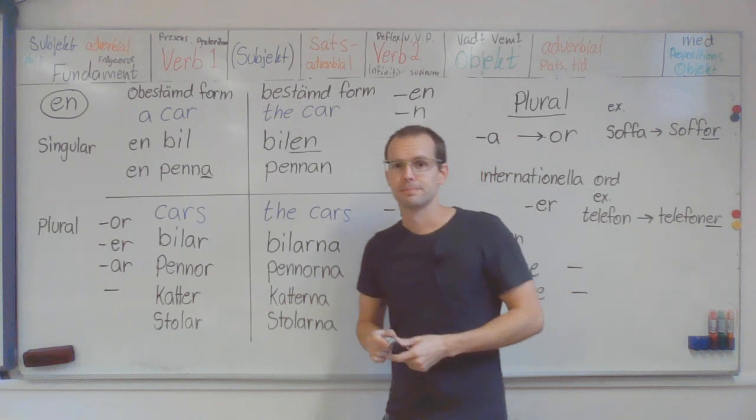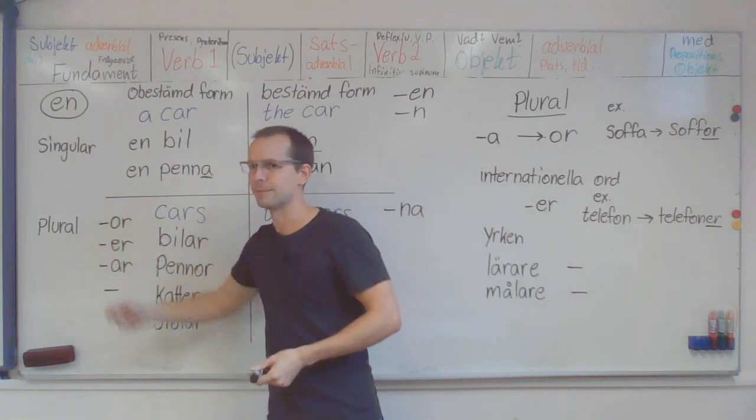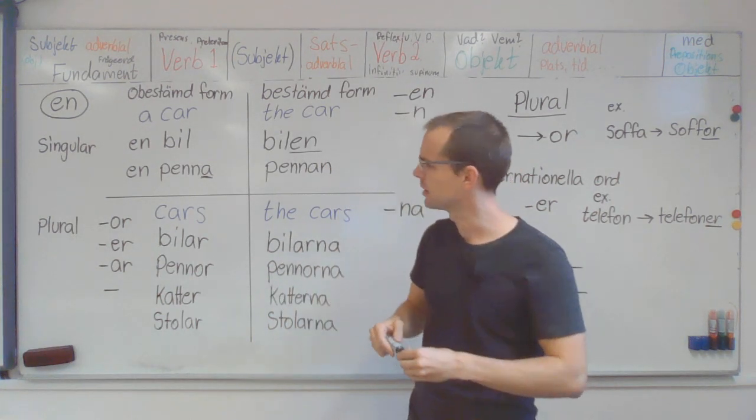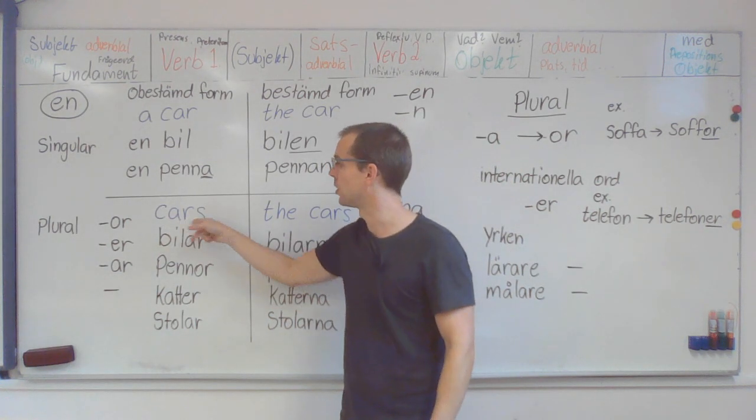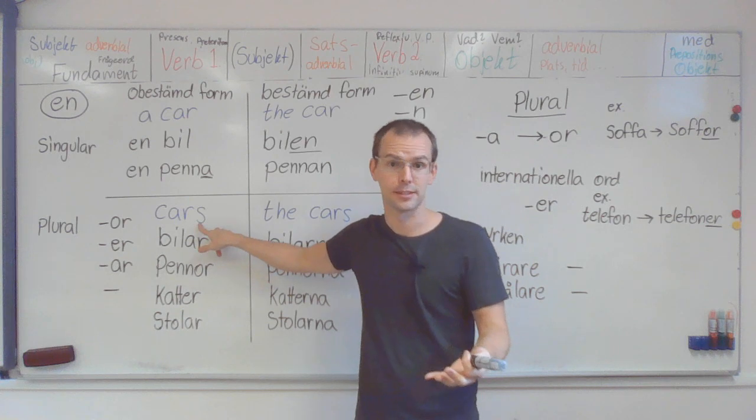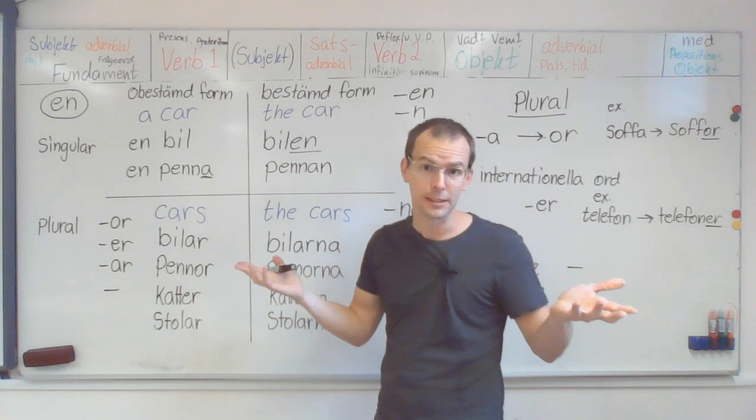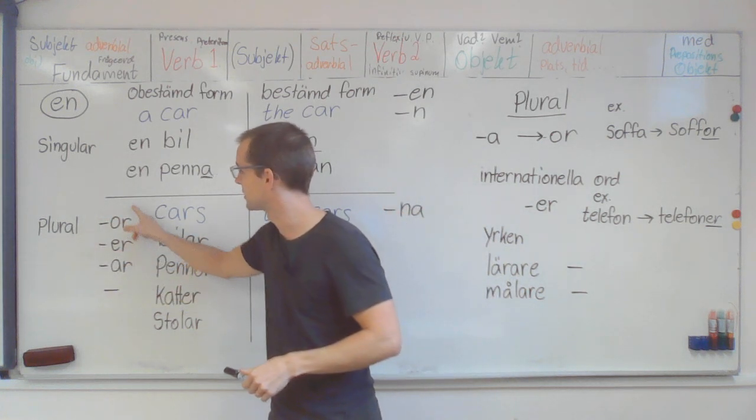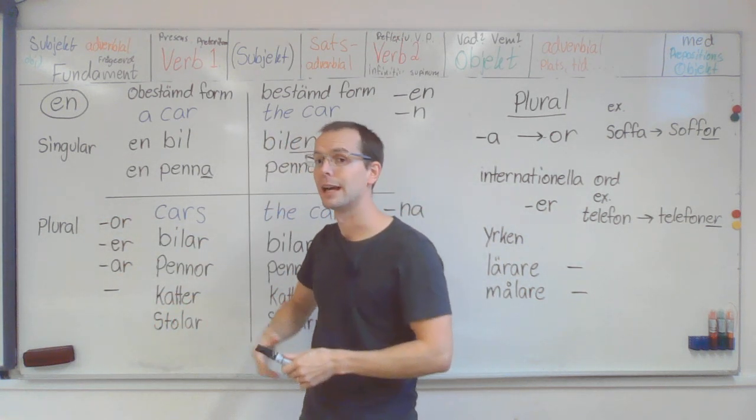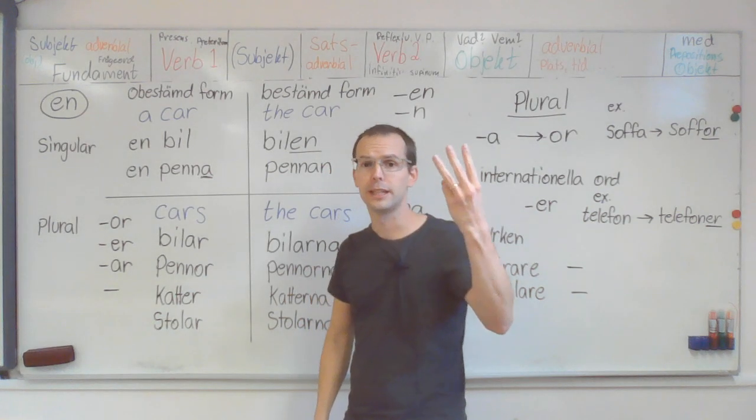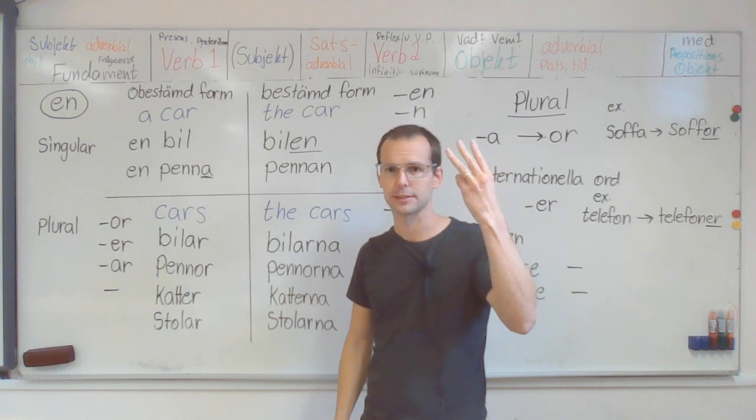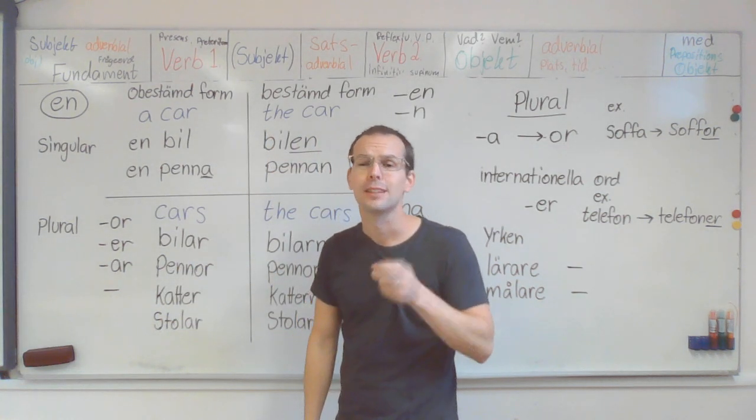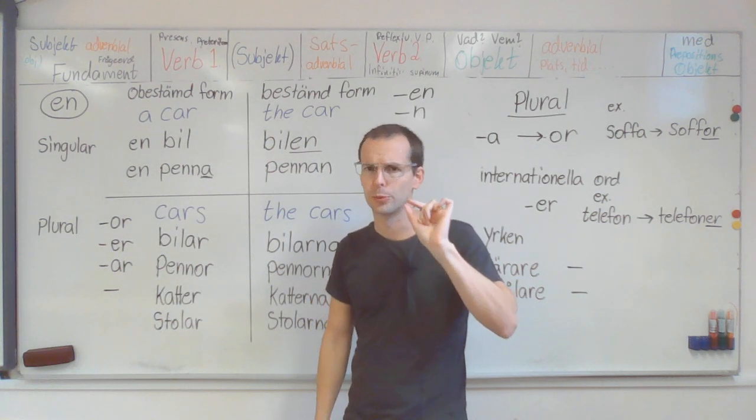But now, plural. And this is difficult. So in English, really easy. Cars. Just put the s. Easy. But in Swedish, we use suffix here as well. And we have three different suffixes for plural. So it depends. There are a few rules.